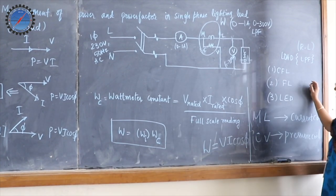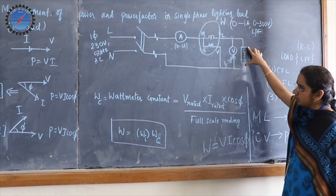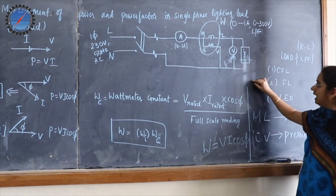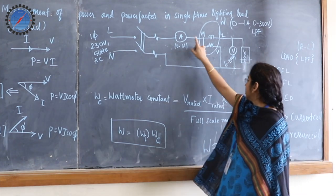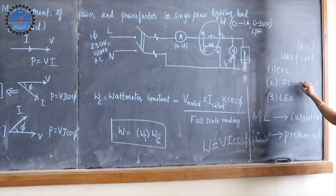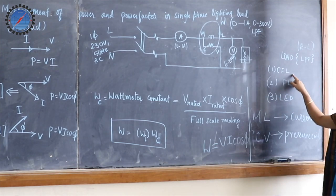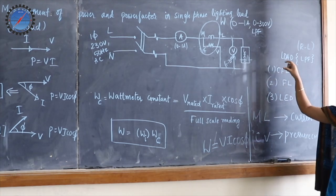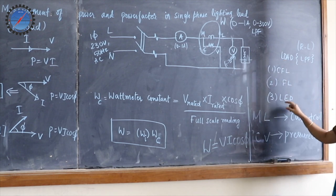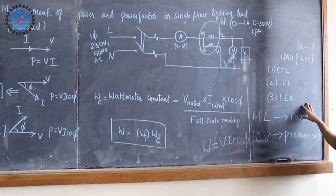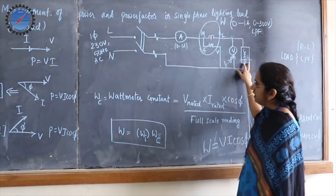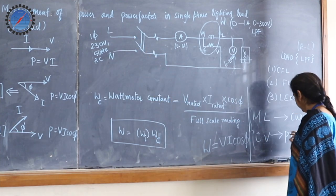Let us consider different loads — all of them are lagging loads. A fluorescent lamp is an inductive coil in series with some resistance, making it an RL load. Similarly, we can try it with a compact fluorescent lamp, which is a miniature version of the fluorescent lamp, and also with an LED lamp. These are the three types of RL loads we will consider to record power and power factor.